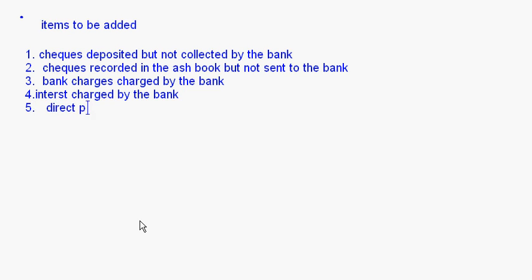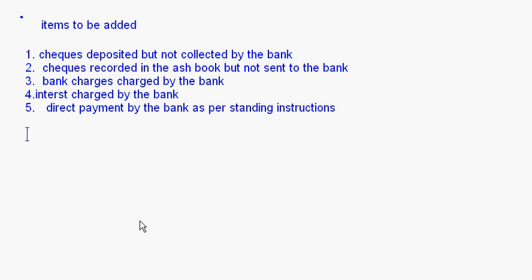The fifth item is direct payment by the bank as per standing instructions. The bank is paying something so it will be debited, but in the cash book the amount will be deducted only when it is intimated to the customer. So the overdraft balance in the bank will be more compared to the overdraft balance in the cash book — this should be added. Also, any wrong debit given by the bank should again be added.